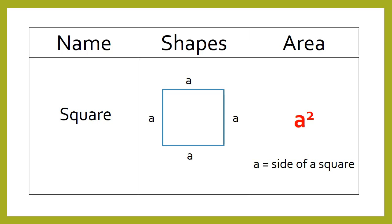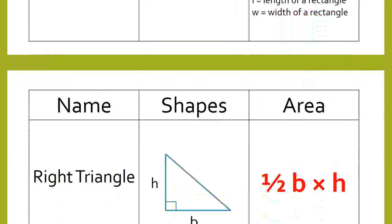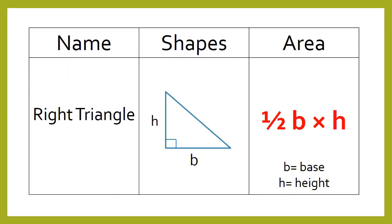Area of a square: a², that is side². Area of a rectangle: length × width. Area of a right angle triangle: 1/2 × base × height.